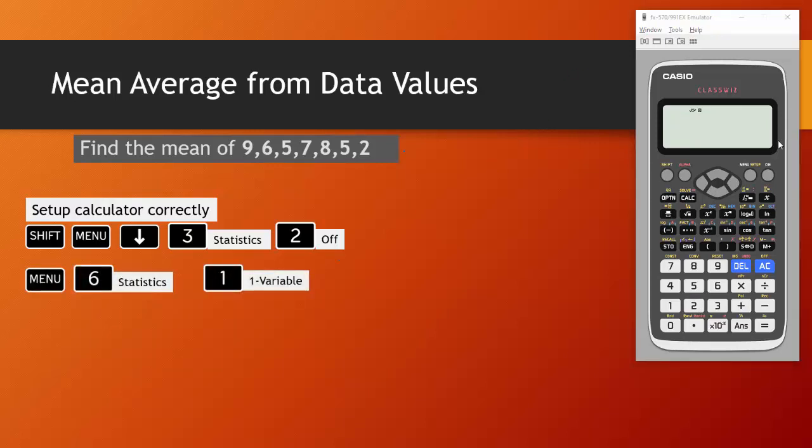Now we can go into menu, select number six for statistics. You can just press six and then we choose number one for one variable.